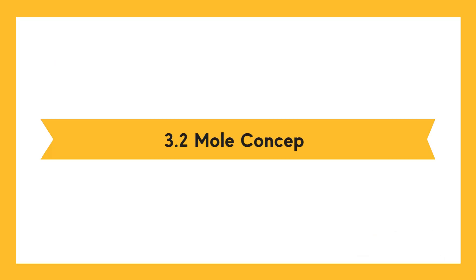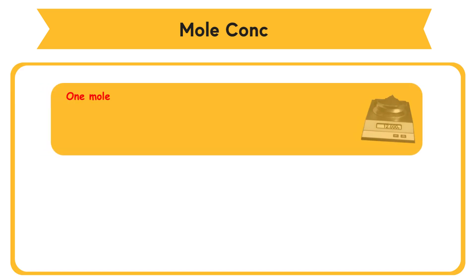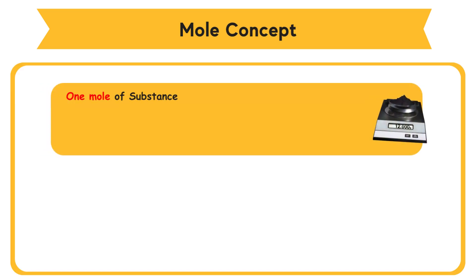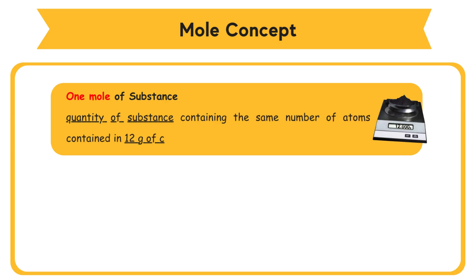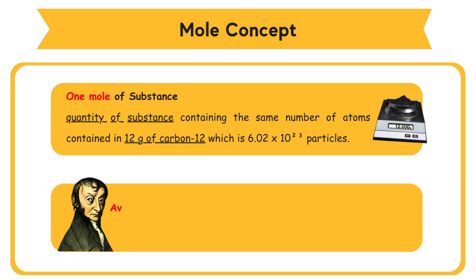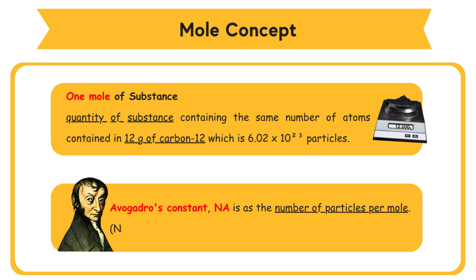3.2 Mole Concept. 1 mole of substance is defined as the quantity of substance containing the same number of atoms contained in 12 grams of carbon-12, which is 6.02 times 10 to the power of 23 particles. Avogadro's constant, N_A, is defined as the number of particles per mole: N_A = 6.02 × 10²³ per mole.